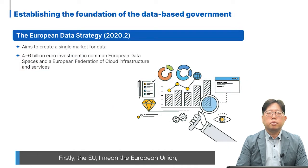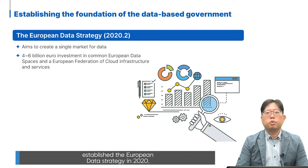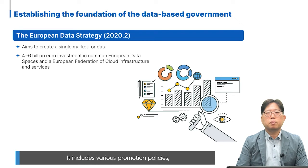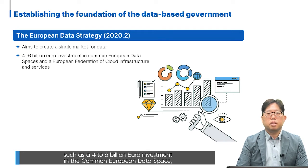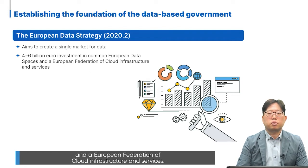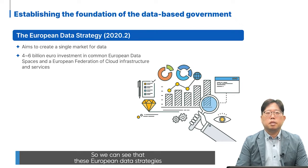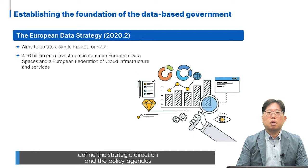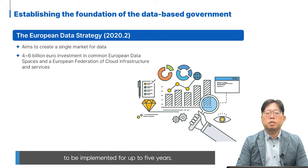The EU established the European Data Strategy in 2020. This strategy aims to create a single market for data. It includes various promotion policies such as 4 to 6 billion euro investment in common European data spaces and a European federation of cloud infrastructure and services. This European Data Strategy defines the strategic direction and policy agendas to be implemented up to 5 years.